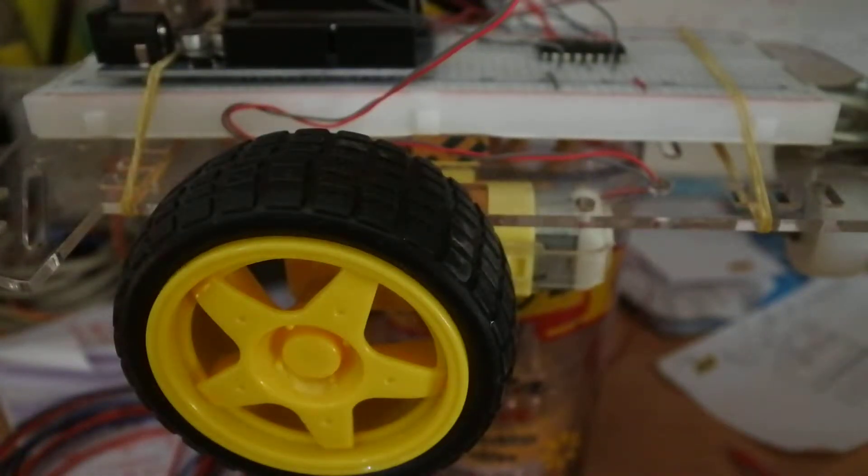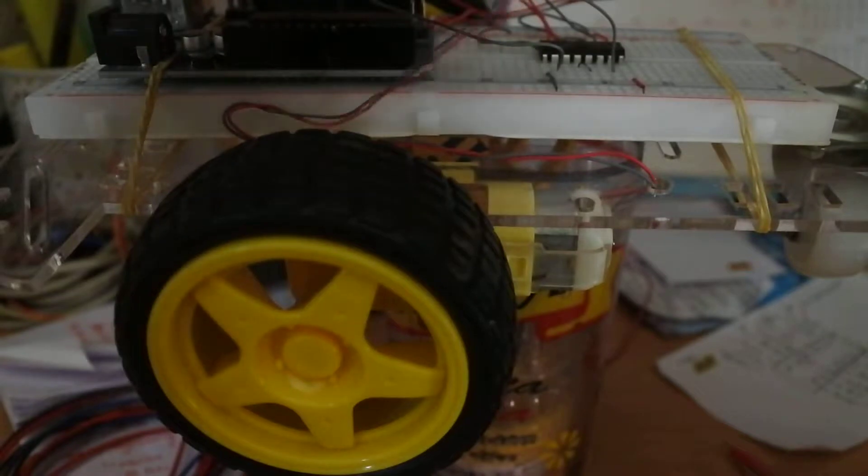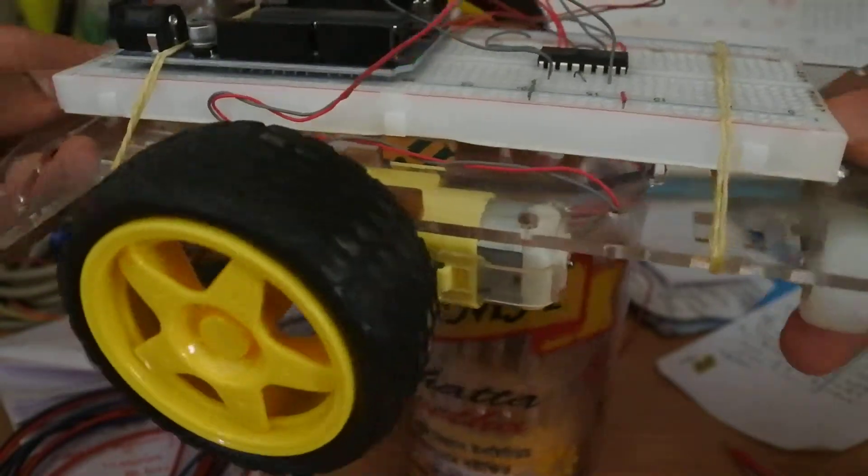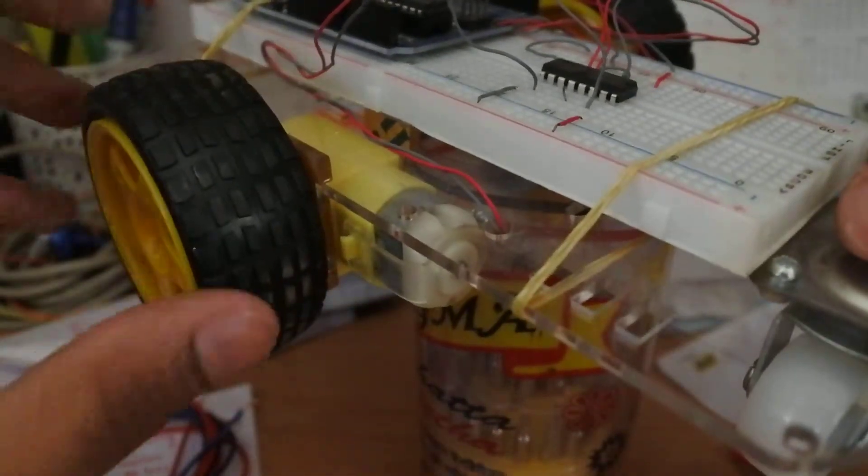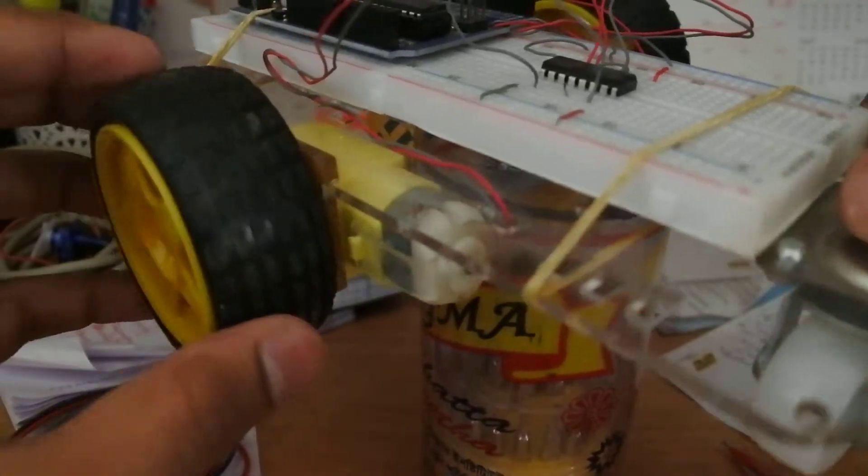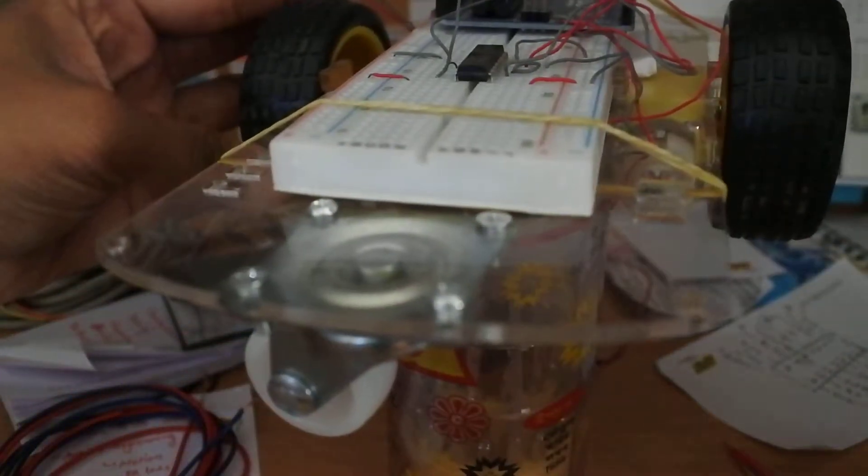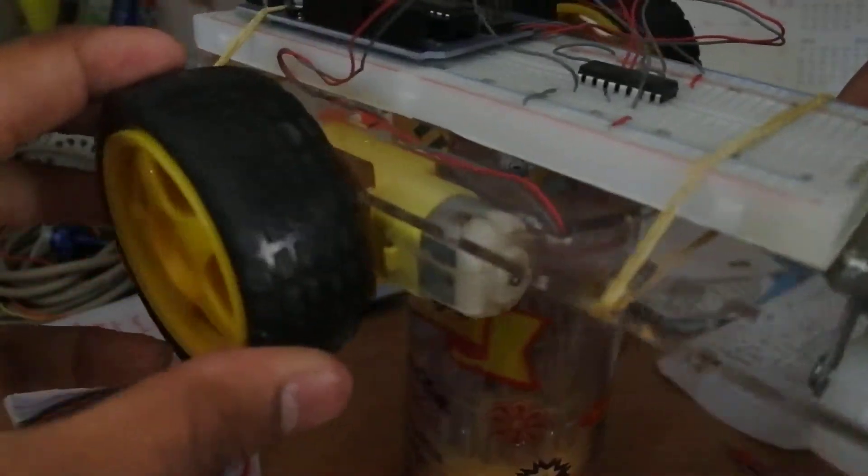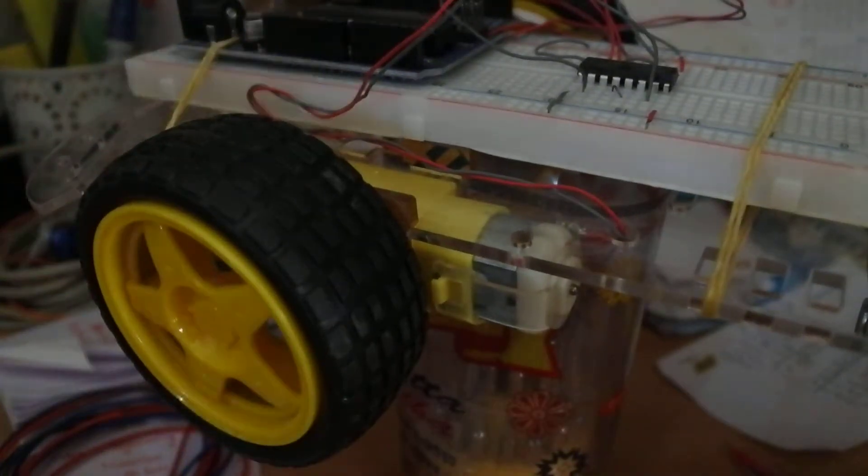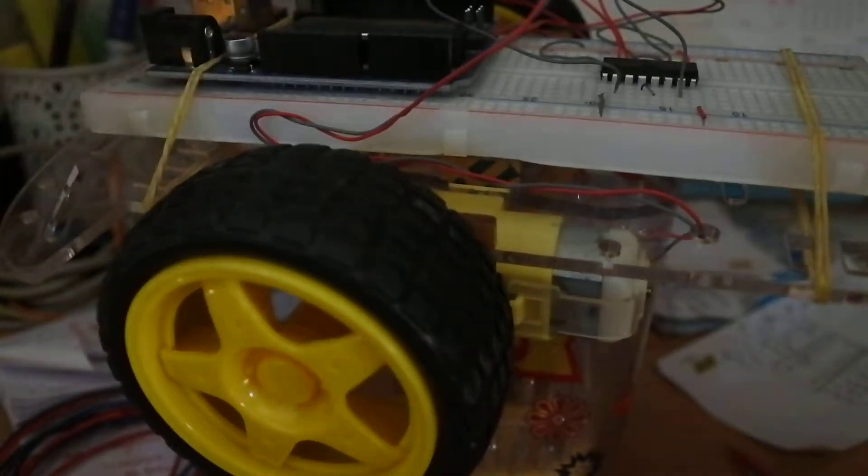In this video we're going to test our motors for our kit. As you can see we have the left motor and on the right side we have the right motor. Now the thing is there is an interesting thing about DC motors where you can have this battery, and you can have these batteries connected to your motors and you can see them rotate.